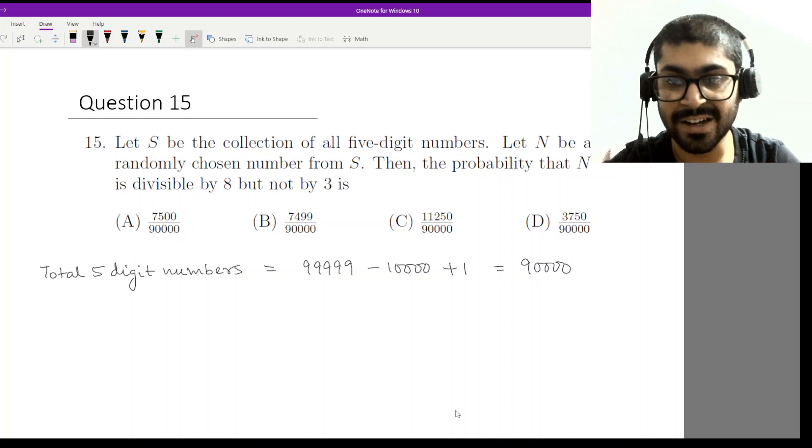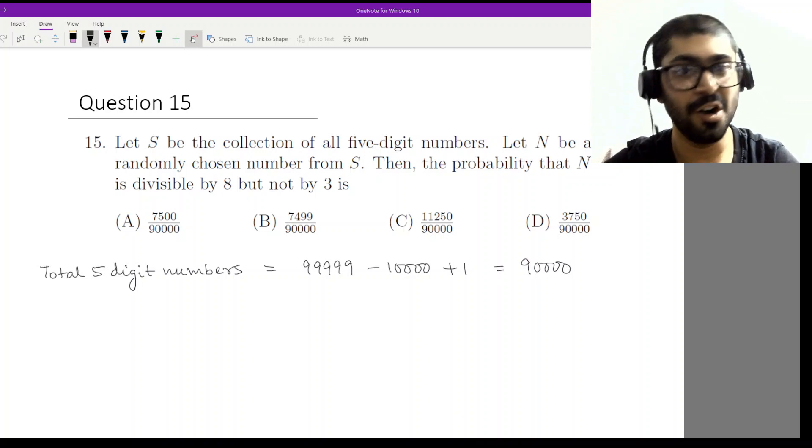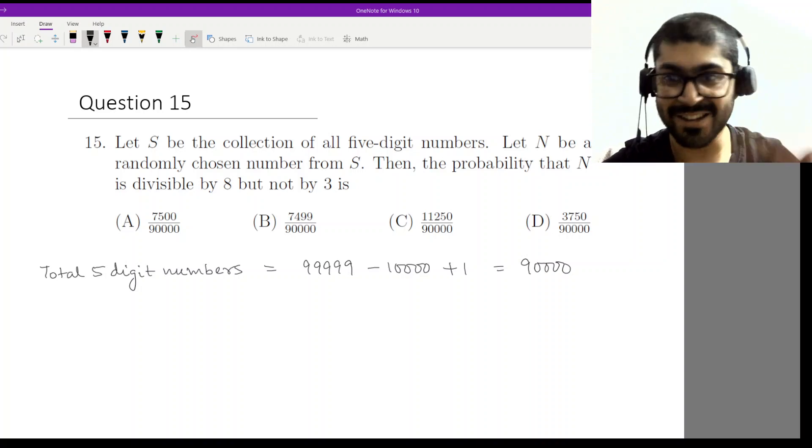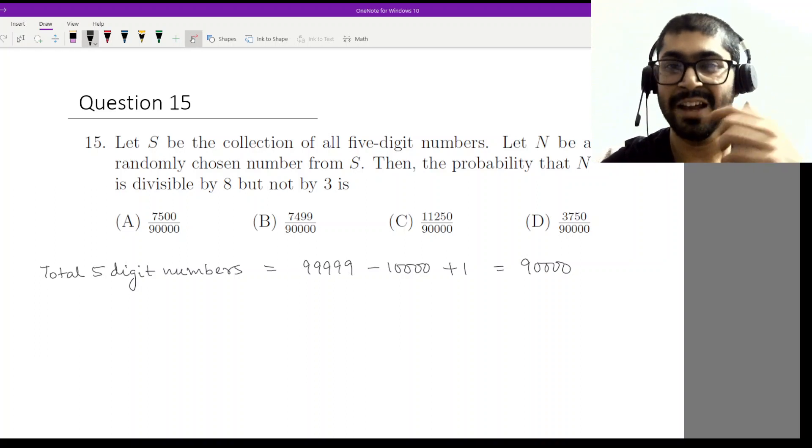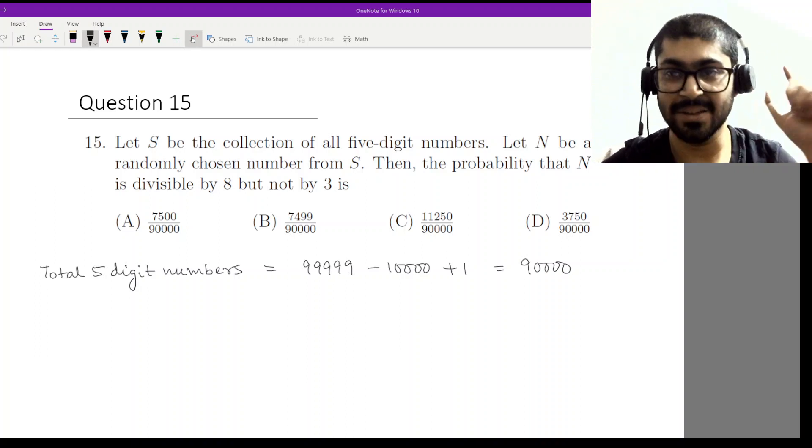Now you can see why the denominator is 90,000 in all of the options. You cannot eliminate any option just by doing this one step. If this was an easier examination, you would have seen different denominators and could eliminate maybe two options from the first step itself.